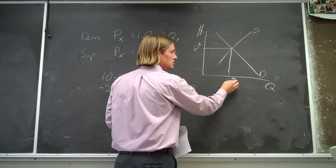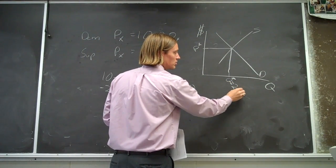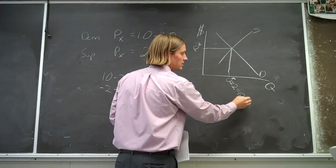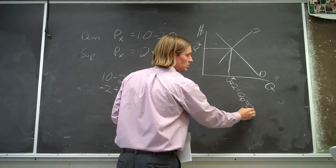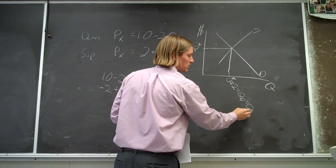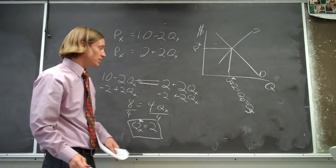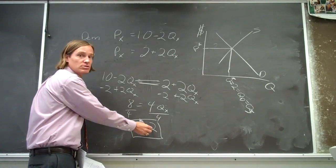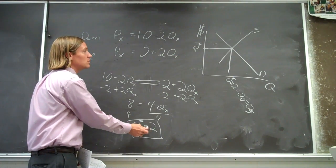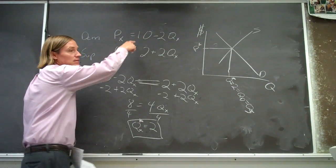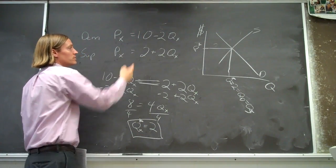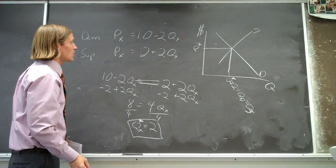So this q is equal to 2, it's equal to the quantity demanded, it's equal to the quantity supplied at that equilibrium. But what's the price? How do we find the price? Well, we're going to take this q of 2, this quantity of 2, plug it back into either the demand function or the supply function, and we can solve for price.